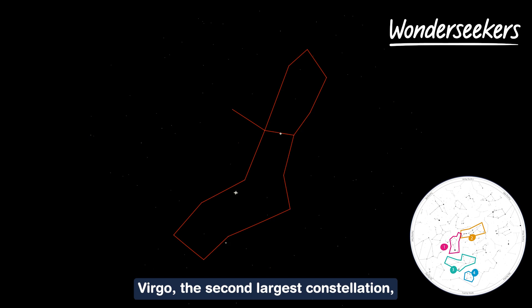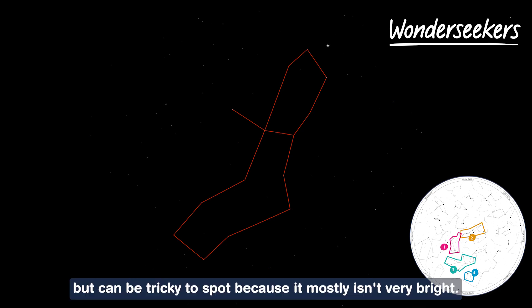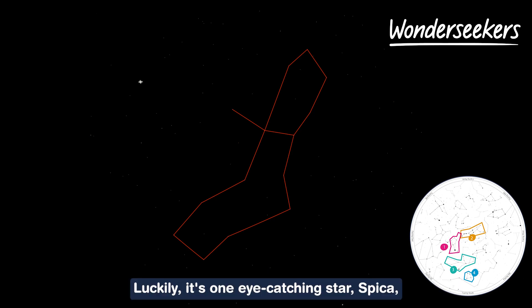Virgo the second largest constellation is also in this part of the sky but can be tricky to spot because it mostly isn't very bright. Luckily its one eye-catching star, Spica, is one of the most visible in the whole night sky.